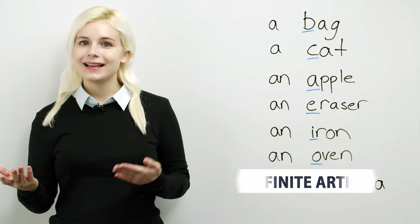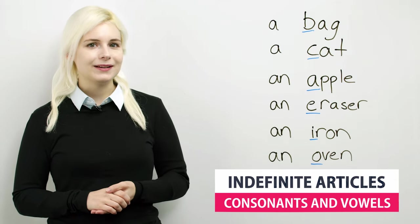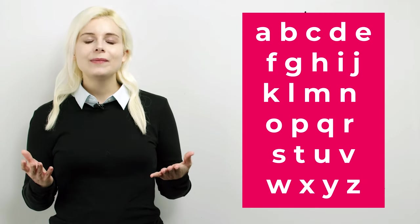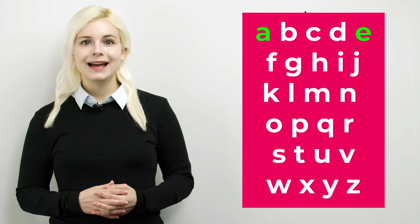Before we learn about a and an, it's important to know what consonants and vowels are. The English alphabet has 26 letters. 21 letters are consonants and there are 5 main vowels: A, E, I, O, U.